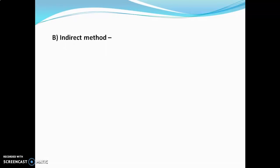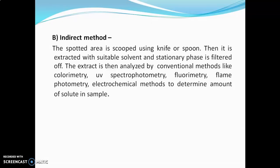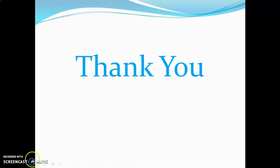In the indirect method, the spot area is scraped using a knife or spoon, then extracted with a suitable solvent, and the stationary phase is filtered off. The extract is then analyzed by conventional methods like colorimetry, UV spectrophotometry, fluorimetry, flame photometry, or electrochemical methods to determine the amount of solute. I hope you understood all these points. Thank you for watching.